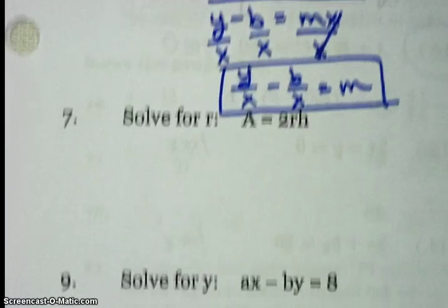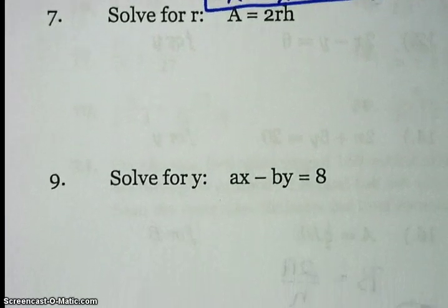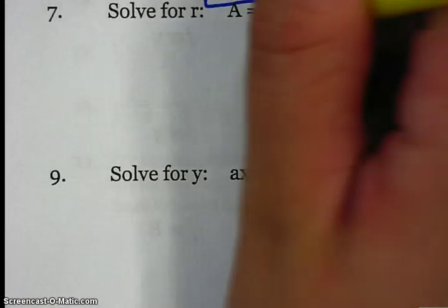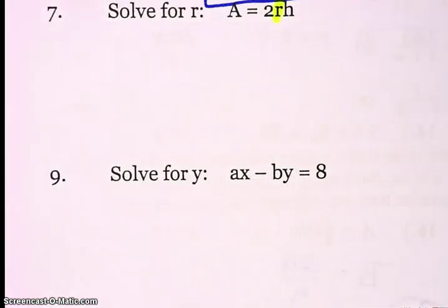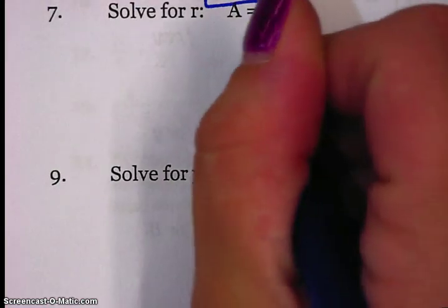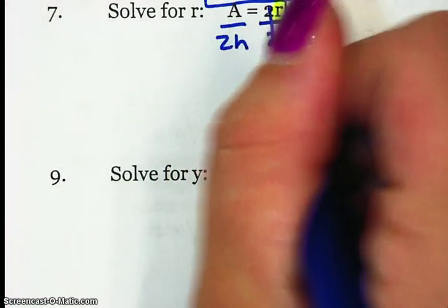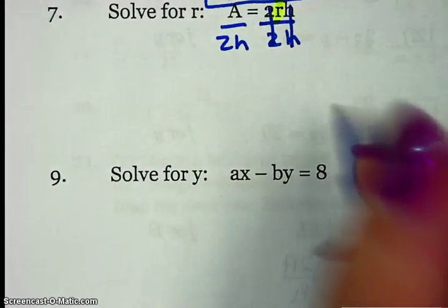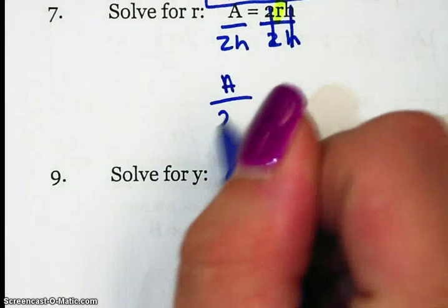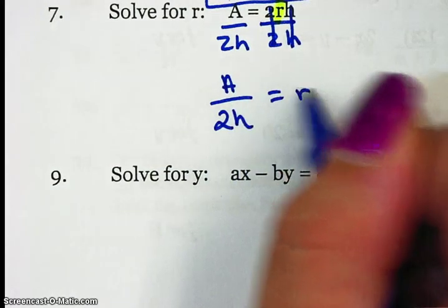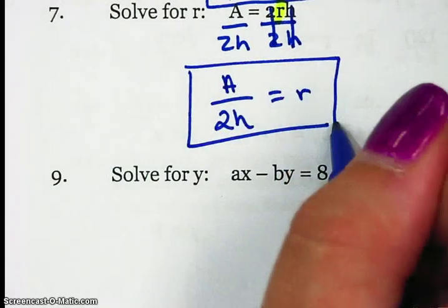Alright, number 7, solve for R. A equals 2RH, one term. So all I need to do is take care of the multiplying by dividing by 2 and H. So that leaves me with A over 2H equals R, and I'm done.